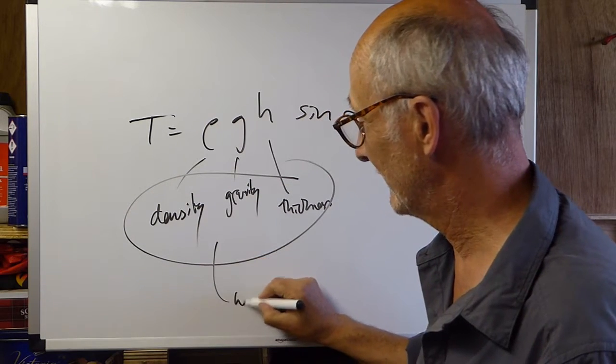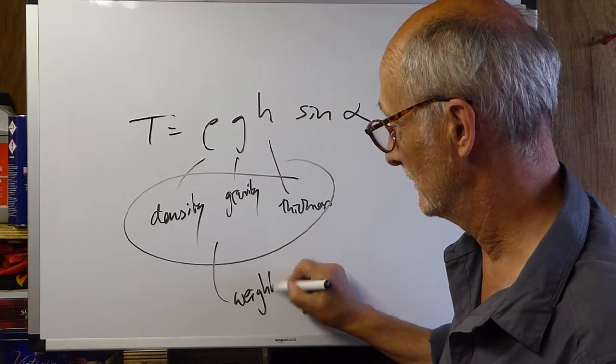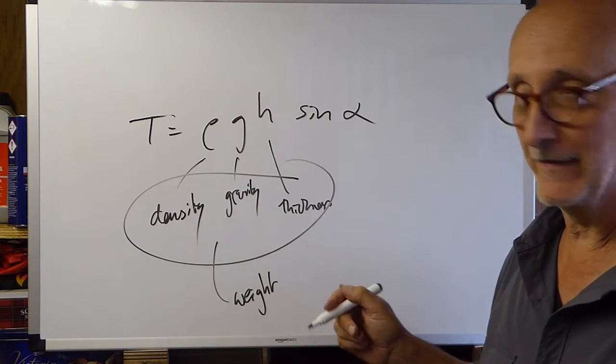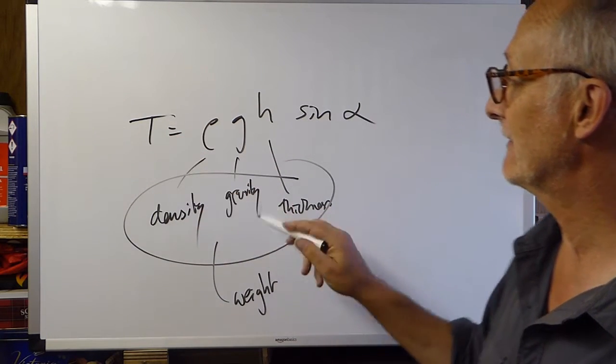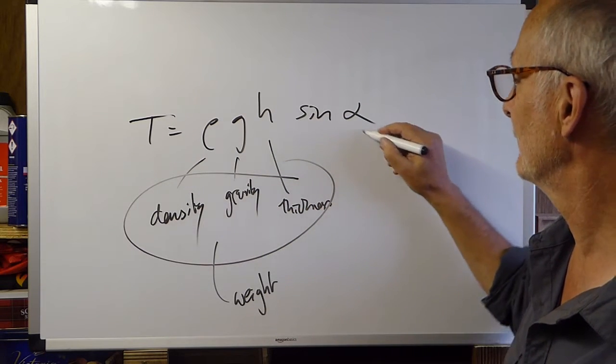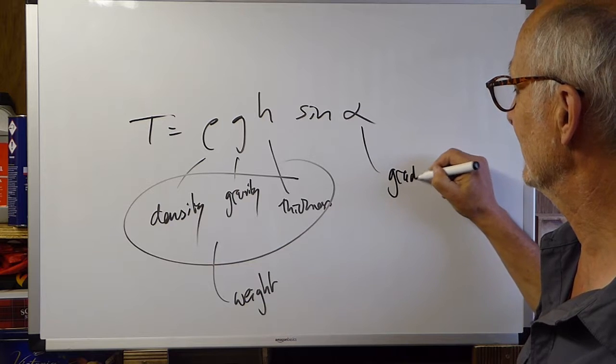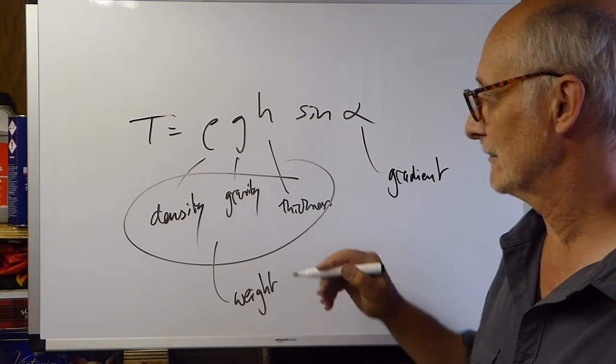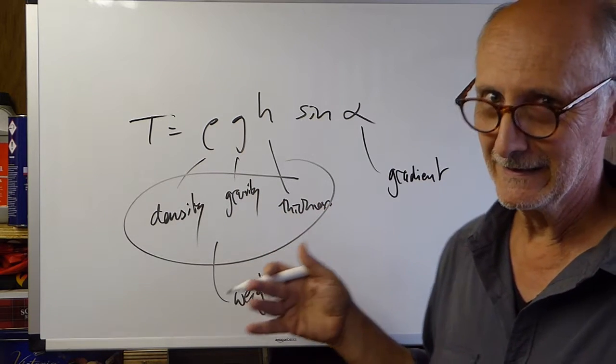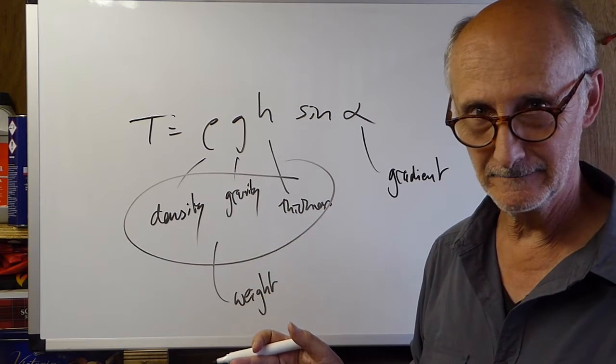Combining those together, that's essentially the weight of the ice. The density, the force of gravity, and the thickness. So, the shear stress is given by the weight of the ice, multiplied by sine alpha. Alpha, that's the gradient of the ice surface. So, rho g h sine alpha, the weight of the ice and the gradient of the surface.